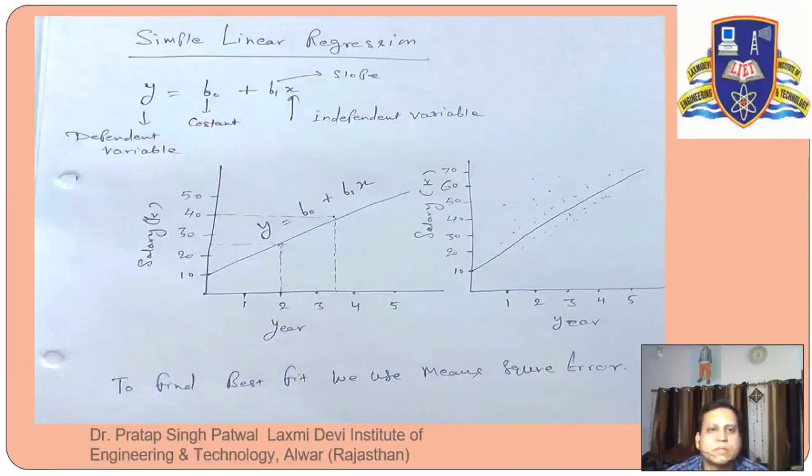We need to understand this. Here we have used variables y equal to b0 plus b1 x. Here b1 is slope and x is independent variable. And y here is dependent variable, which will depend on all these values.